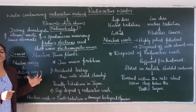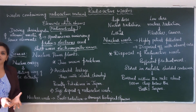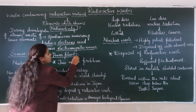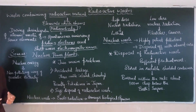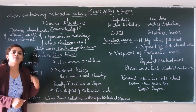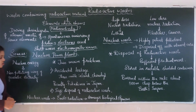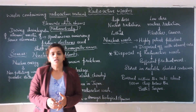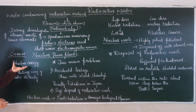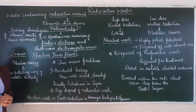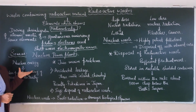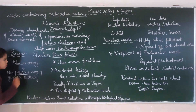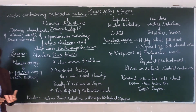What are the sources of radioactive waste? The main source is nuclear power plants. Earlier, it was thought that nuclear energy obtained from radioactive elements was a non-polluting way of generating electricity.